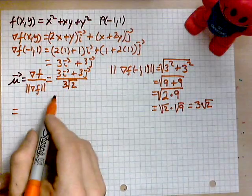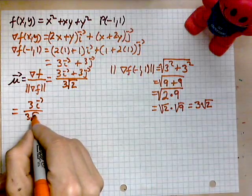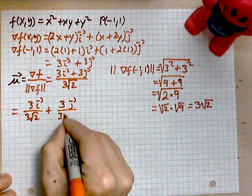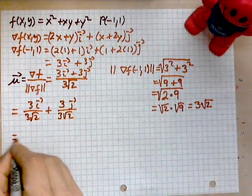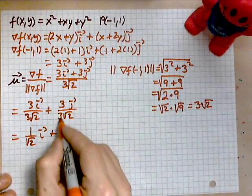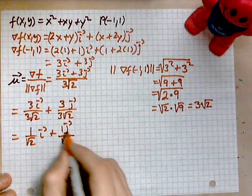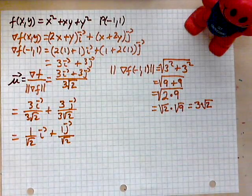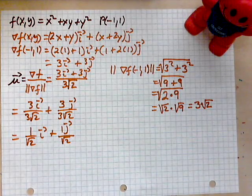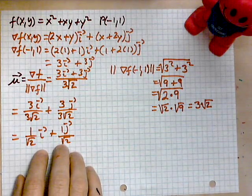We divide the entire gradient by 3√2, then simplify by breaking it into separate pieces: 3i/(3√2) + 3j/(3√2). Canceling the 3s gives us (1/√2)i + (1/√2)j. This is the direction of most rapid increase or decrease in the values of the function.